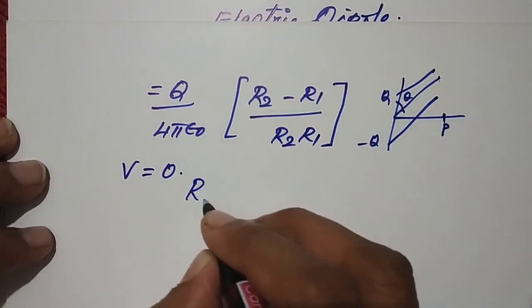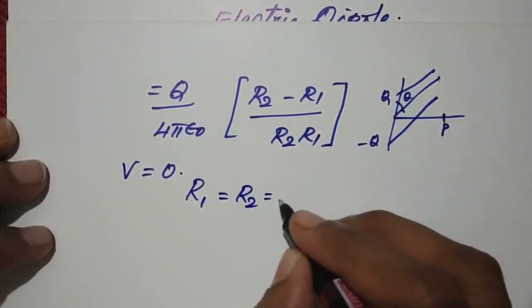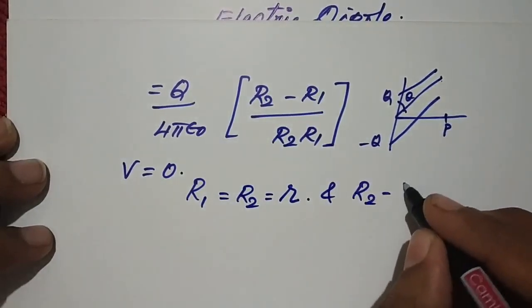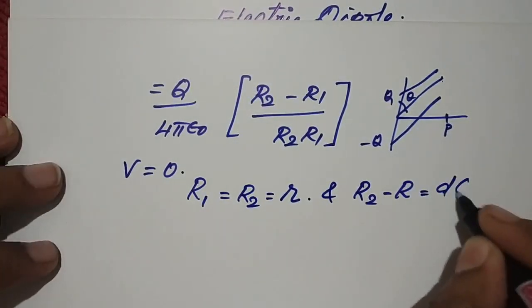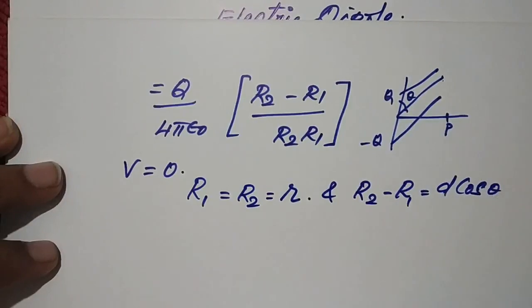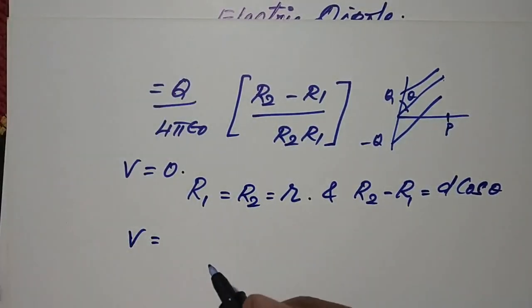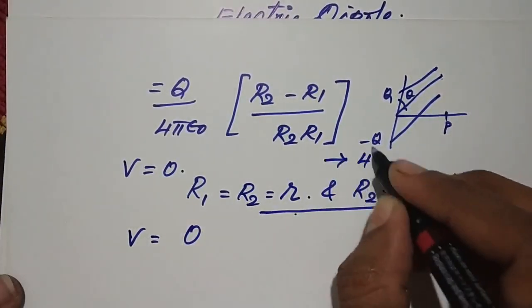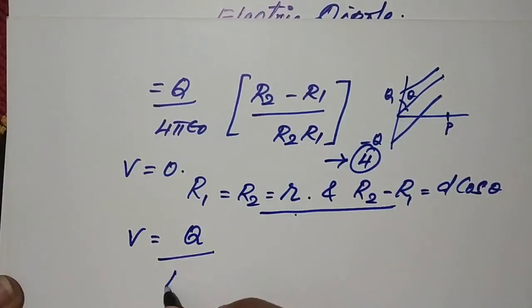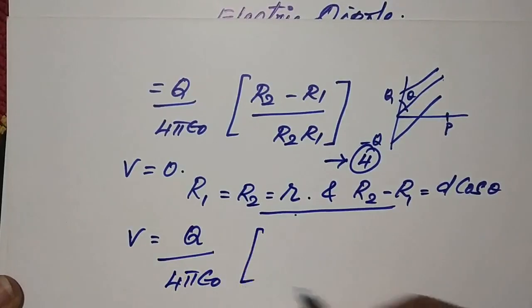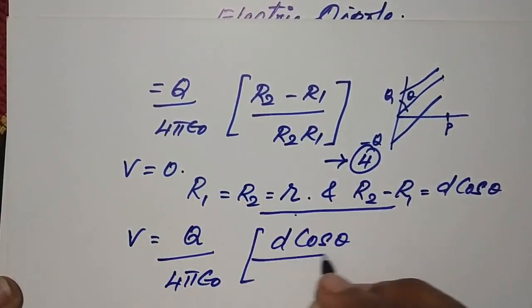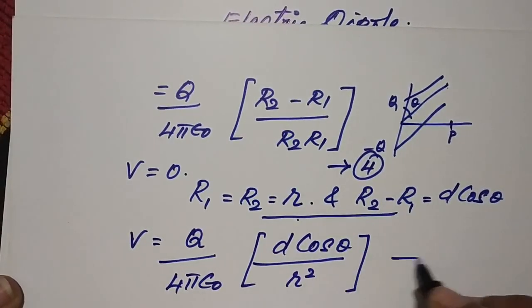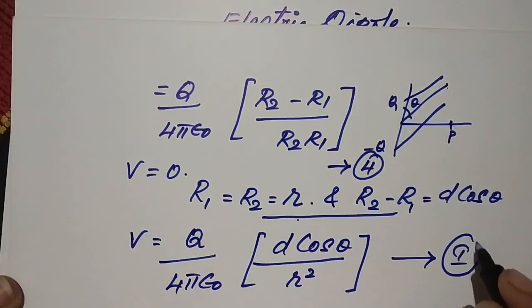If point P is located at a very far distance compared to the two charges, then r1 and r2 both approach the same radius r, and r2 - r1 = d·cosθ as we already derived. Substituting into the expression, V = q·d·cosθ / (4πε₀·r²). Let this be our first expression.